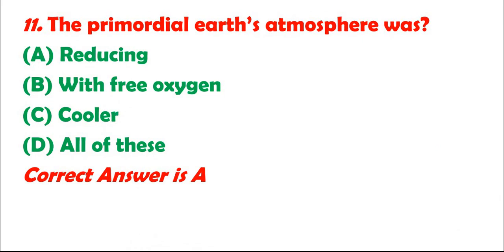Question 11: The primordial Earth's atmosphere was: A. Reducing. B. With free oxygen. C. Cooler. D. All of these. Correct answer is A.